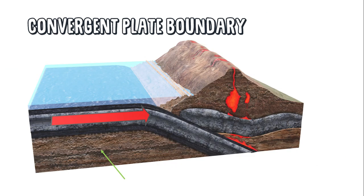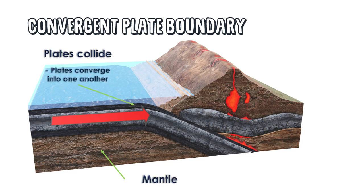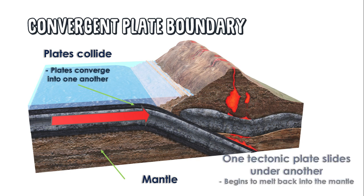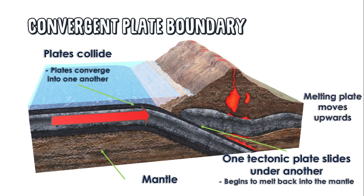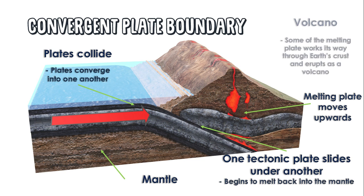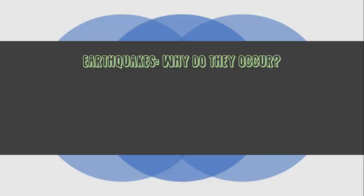In a convergent plate boundary, a few things take place: first, plates collide into one another on top of the boiling mantle. Second, one tectonic plate slides under the other and begins to melt back into the mantle. Third, the melting plate moves upwards, and finally some of the melting plate works its way through the earth's crust and erupts as a volcano.